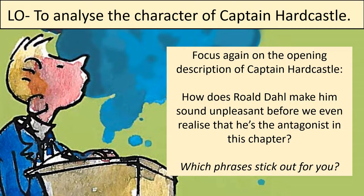Now that you've read the chapter, you're going to focus more carefully on the opening description of Captain Hardcastle and think about this question: how does Roald Dahl make him sound unpleasant before we even realise that he's the antagonist? You might be wondering what an antagonist is. An antagonist is the opposite of a protagonist. A protagonist is the hero — the main character in a story — and therefore the antagonist is the villain.